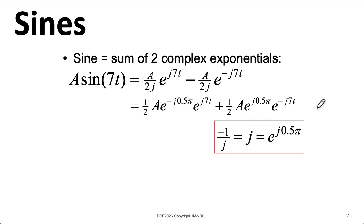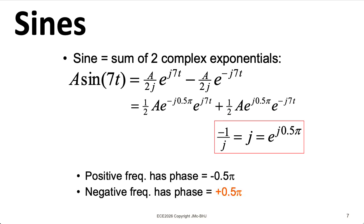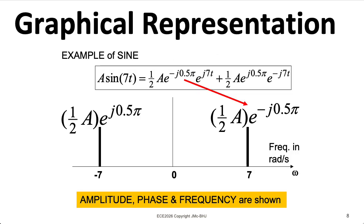So this makes the conjugate symmetry clear. So my positive frequency has a phase of minus 0.5 pi, and my negative frequency has a phase of plus 0.5 pi. And you can represent that graphically like this. The moment you see something that looks like E to the j pi over 2 here, you should automatically think, ah, that's a sine wave as in the sin function.